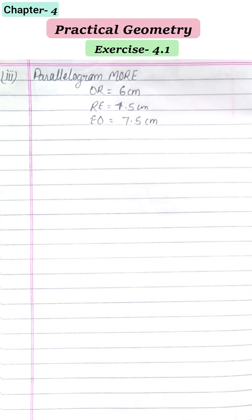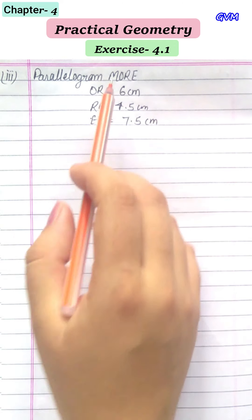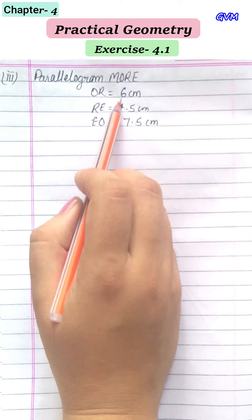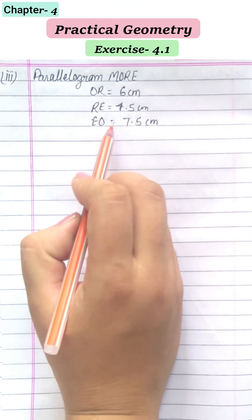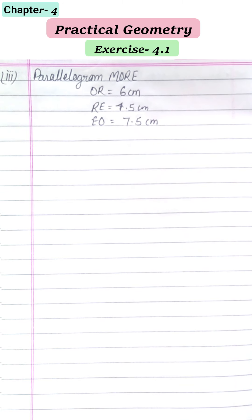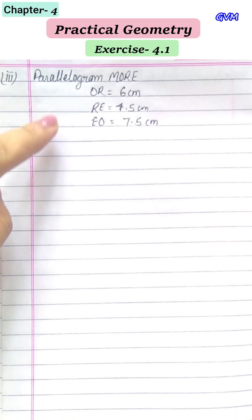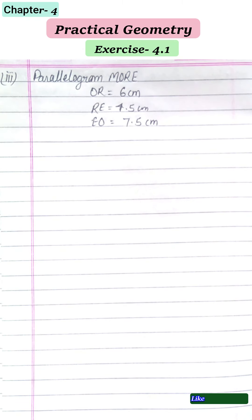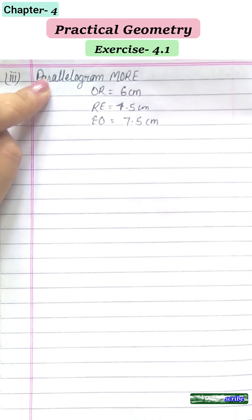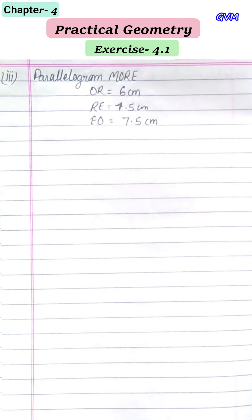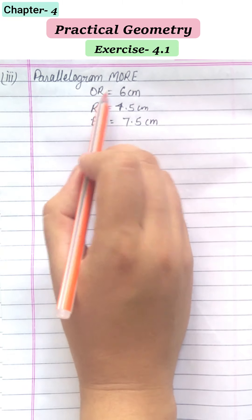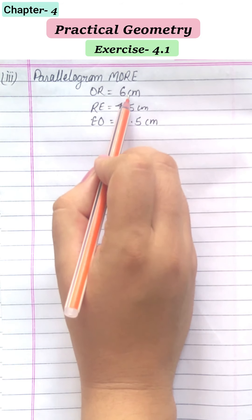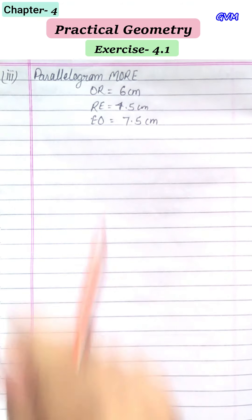Now let's move to the third part: constructing parallelogram MORE. We need to construct this parallelogram where OR = 6 cm, RE = 4.5 cm, and EO = 7.5 cm. You may wonder that only three lengths are given. Since this is a parallelogram, its property is that opposite sides are equal — so the side opposite OR is also 6 cm, and opposite RE is also 4.5 cm.